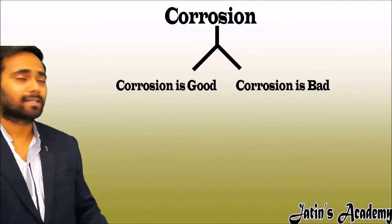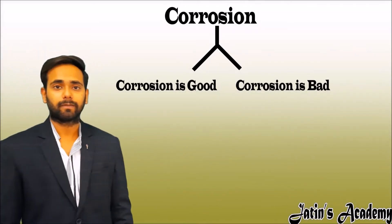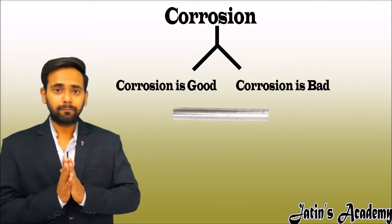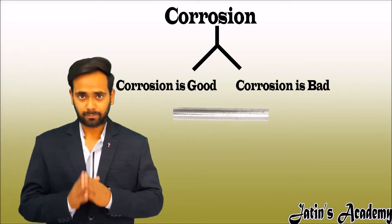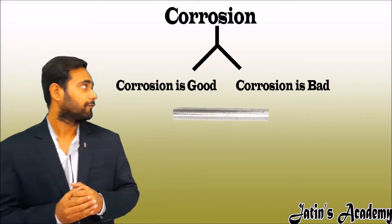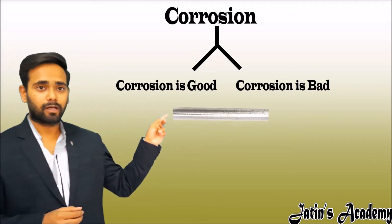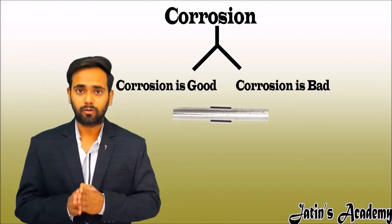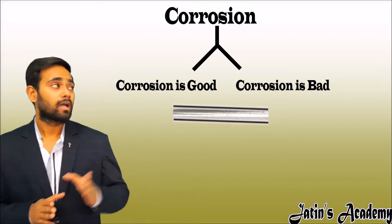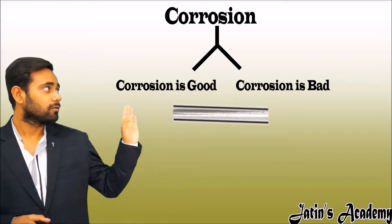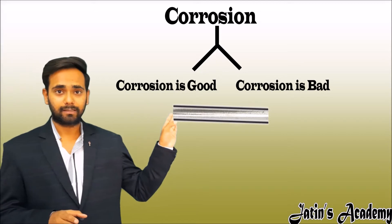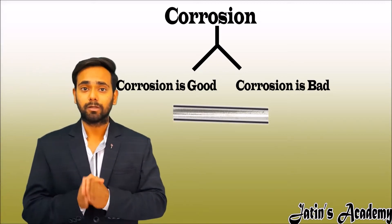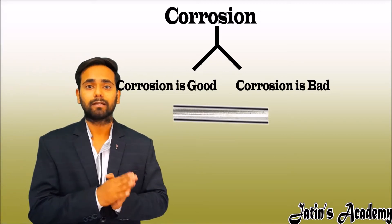Now take the example of another metal — aluminium. When aluminium is exposed to the environment, a layer of aluminium oxide is formed on its surface. The aluminium oxide layer is stronger than the aluminium metal itself.